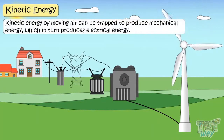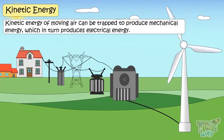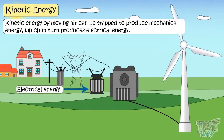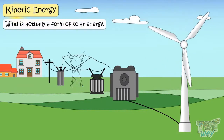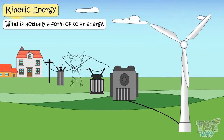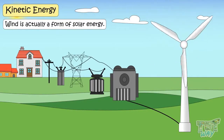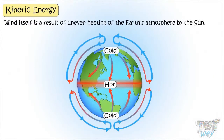Kinetic energy of moving air can be trapped to produce mechanical energy that in turn produces electrical energy. Do you know wind is actually a form of solar energy? It is because wind itself is a result of uneven heating of the Earth's atmosphere by the sun.